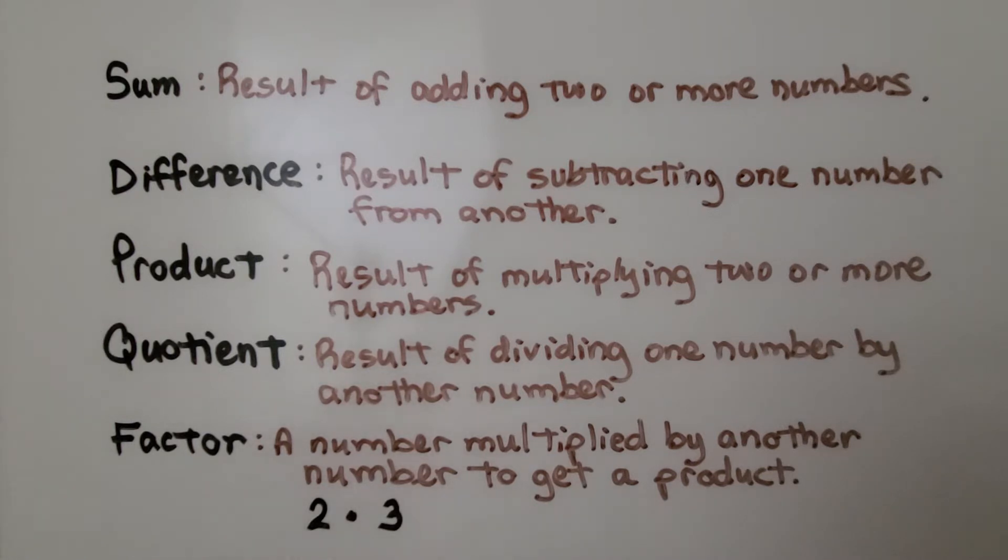And a factor is a number multiplied by another number to get a product. So these are the factors. It's what we multiply together to get the product.